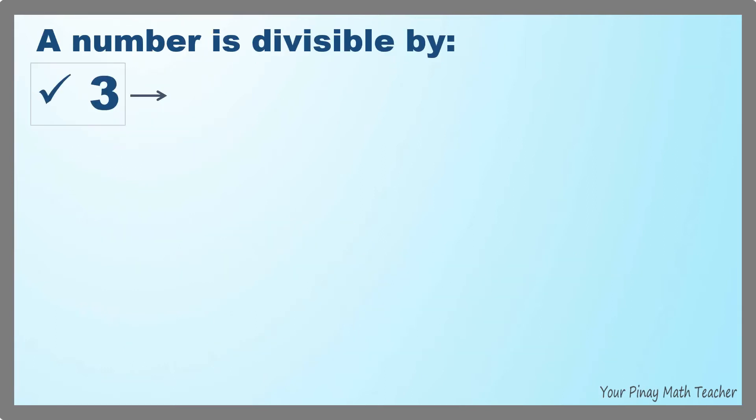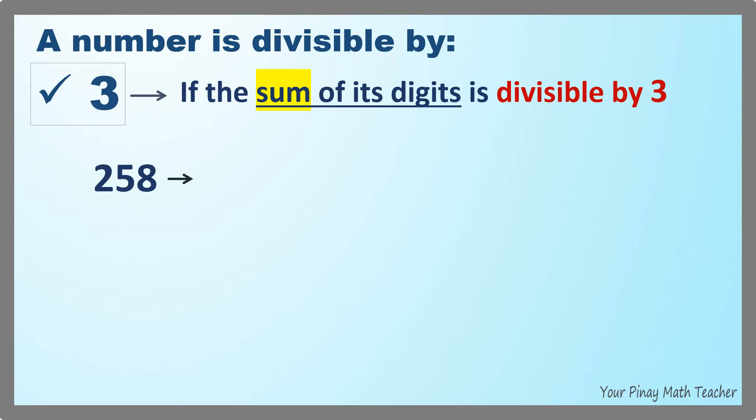A number is divisible by 3 if the sum of its digits is divisible by 3. For example, in 258, the digits are 2, 5, and 8.